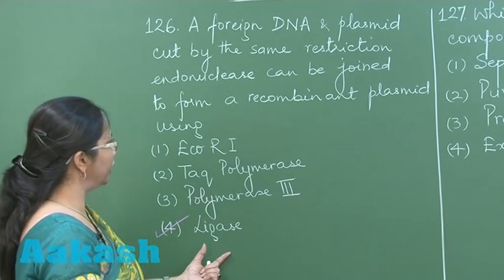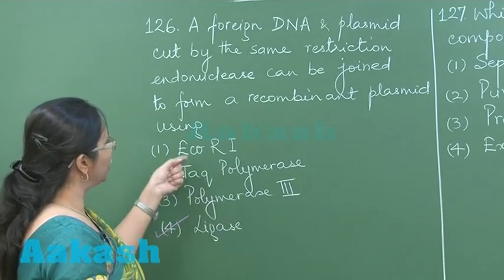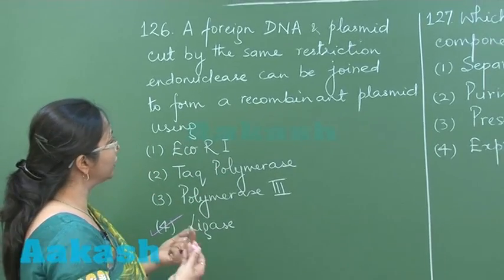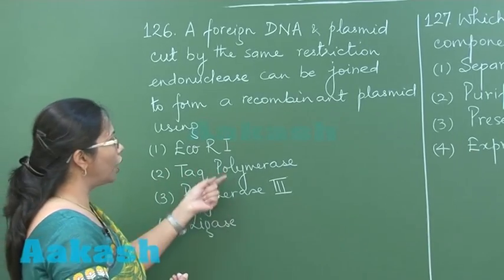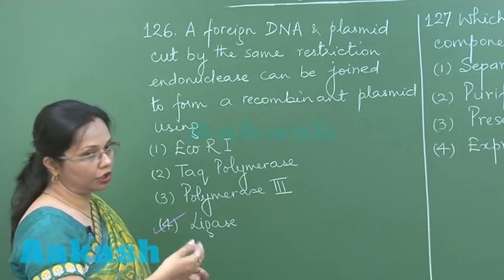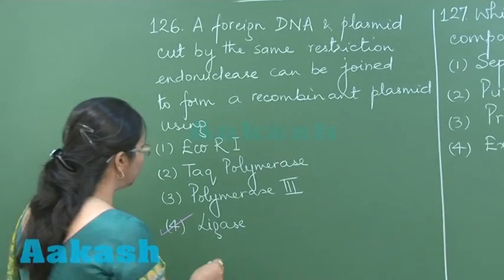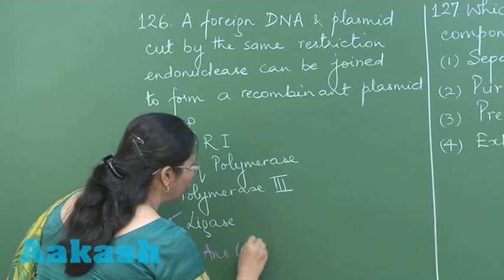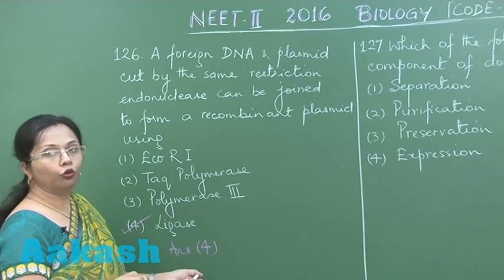Ligase is the molecular glue which joins the two different DNAs. The remaining options — EcoR1 is a restriction endonuclease itself, while the other two are polymerases which polymerize DNA strands. So the answer is 4.